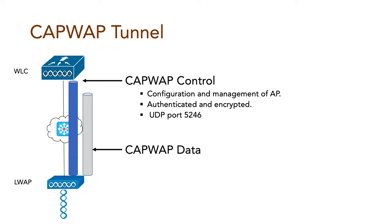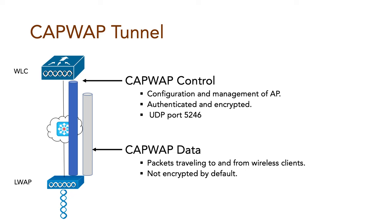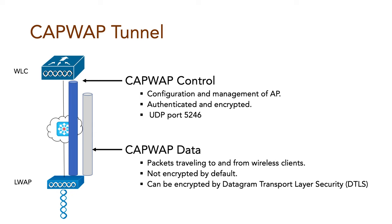The Data Tunnel is used for packets traveling to and from wireless clients associated with the AP. These packets are not encrypted by default, but when data encryption is enabled for an AP, packets are protected with Datagram Transport Layer Security, or DTLS, and it uses UDP port 5247.